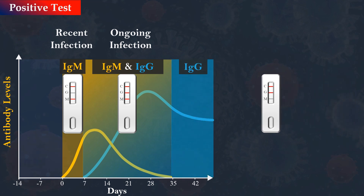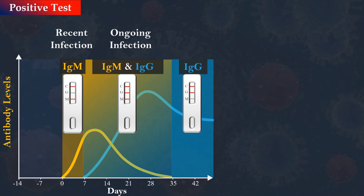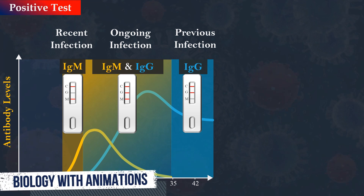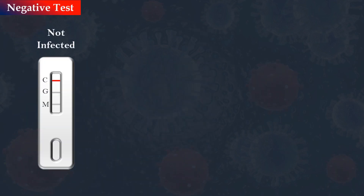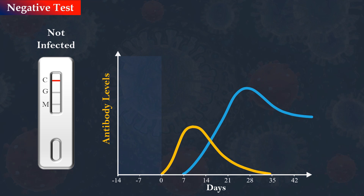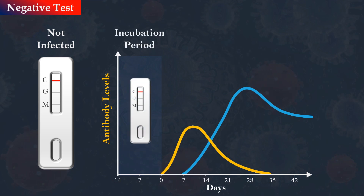When IgG is positive and IgM is negative, the subject's immune system has produced antibodies to the target viral antigen. A negative test result means that the person is not infected with the virus, or perhaps the person has a recent infection but the antibodies are not yet produced.